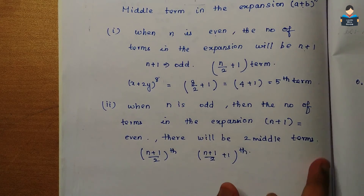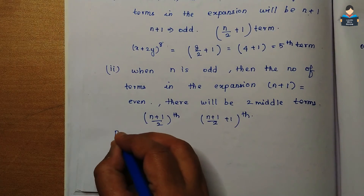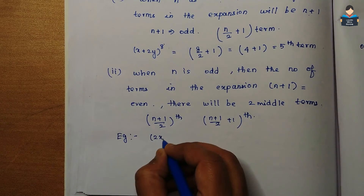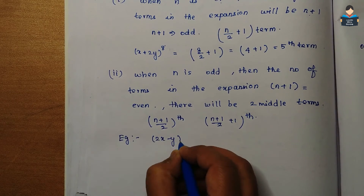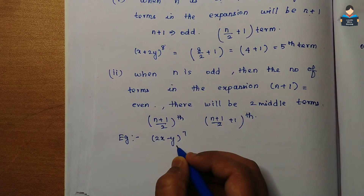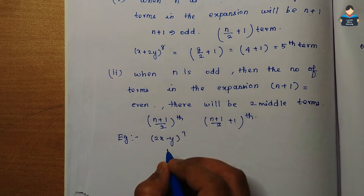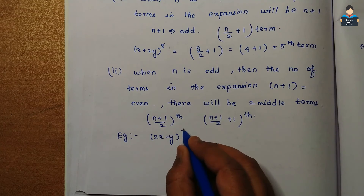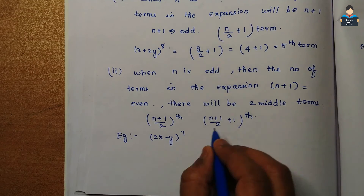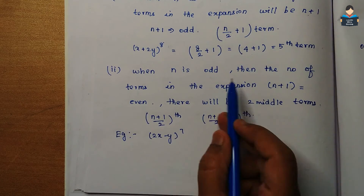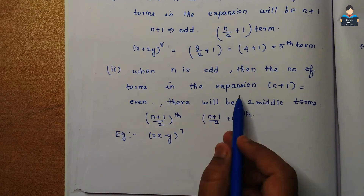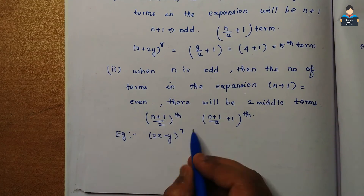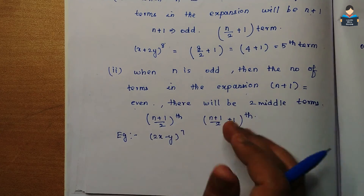Example: (2x - y)^7. The middle terms — n value is 7. Number of terms = 7 + 1 = 8 terms.